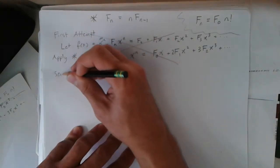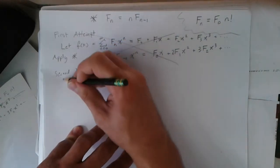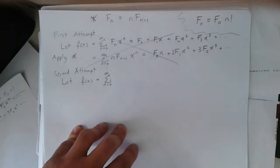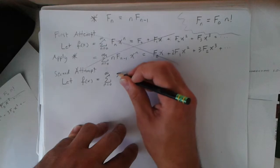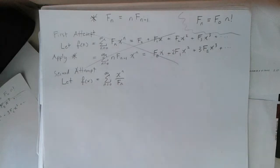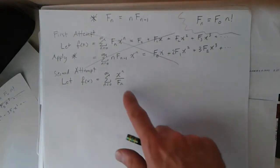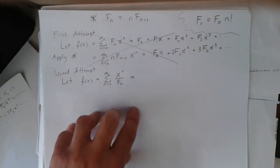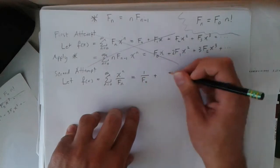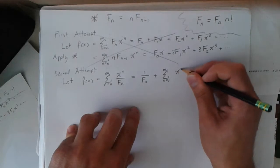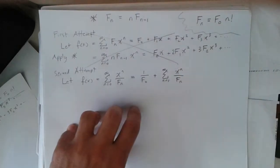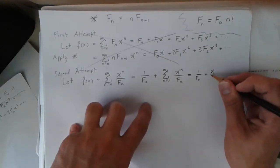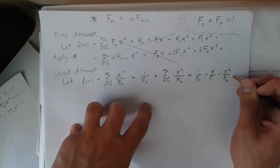That's not a problem — I can just start over with a second attempt and make my generating function a little different. Instead of using f sub n as coefficients, I'll use 1 over f sub n, writing x to the n over f sub n. I'll pull out the zeroth term to avoid a zero in the denominator, giving 1 over f₀ plus the sum from n equals 1 to infinity of x to the n over f sub n — written out: 1/f₀ plus x/f₁ plus x²/f₂, etc.